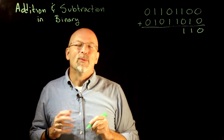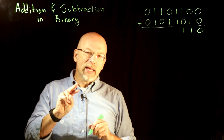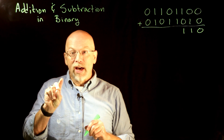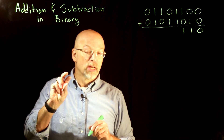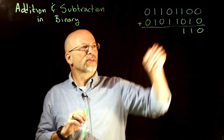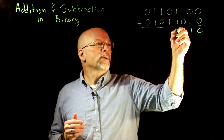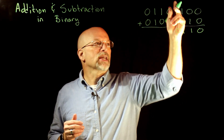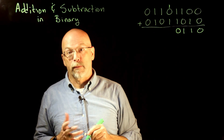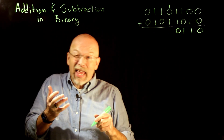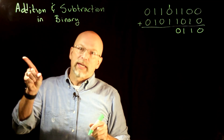One plus zero in any base is one. One plus one — that's two in decimal. What is it in binary? Remember, two in binary is '10' — a one in the two-to-the-one place and a zero in the two-to-the-zero place. So we put the ones place in the same column and carry a one to the next column, just like in decimal: five plus five equals zero with a carry of one.